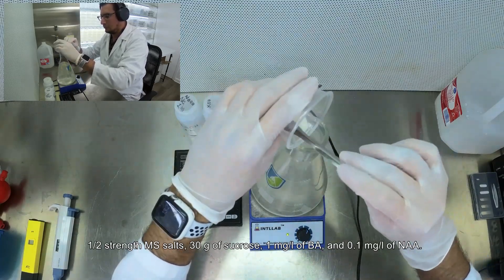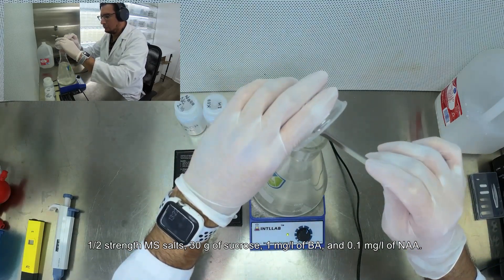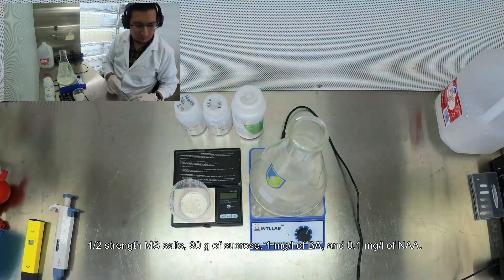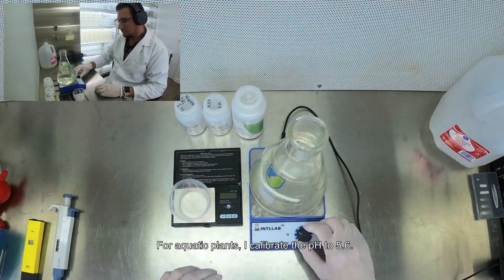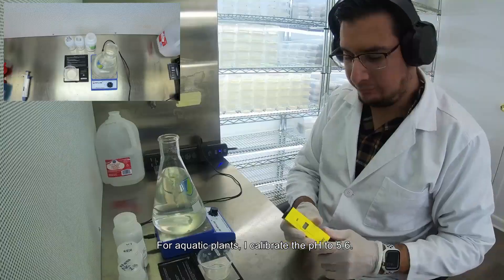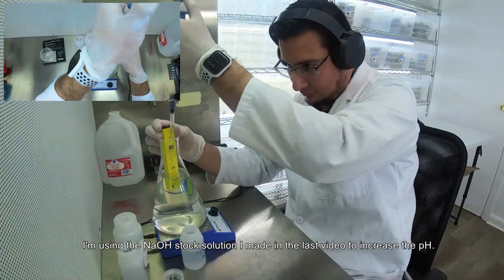Half-strength MS salts, 30 grams of sucrose, 1 milligram per liter of BA, and 0.1 milligram per liter of NAA for aquatic plants. I calibrated the pH to 5.6 using the sodium hydroxide stock solution I made in the last video to increase the pH.